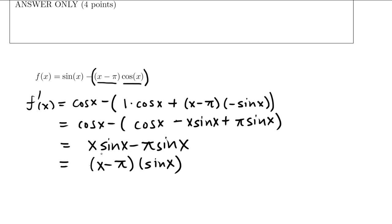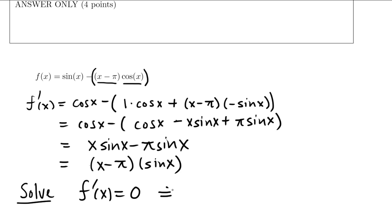We always like to have our derivatives factored because when we solve the critical numbers, we have to solve f prime of x equal to 0. Having something factored being equal to 0 makes it much easier to solve. So let's solve the derivative equal to 0 to find our critical points: (x minus π) times sine x equals 0.